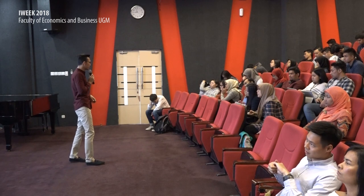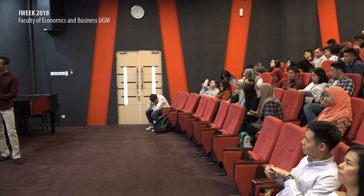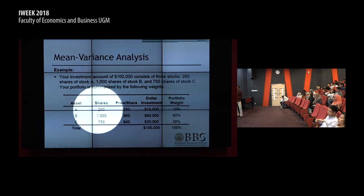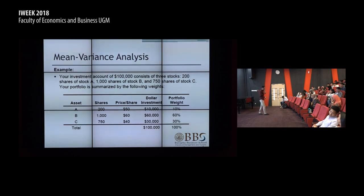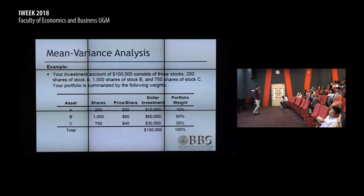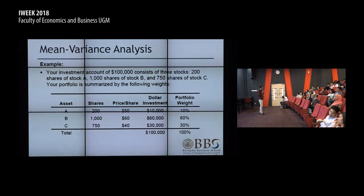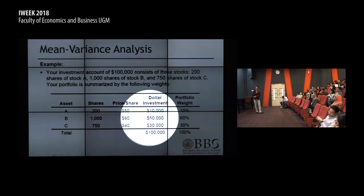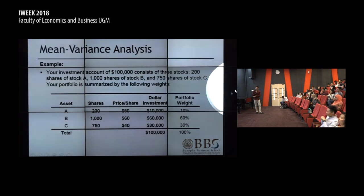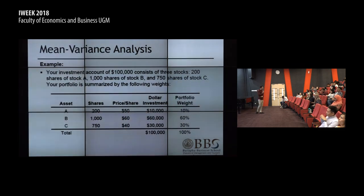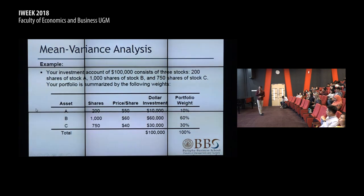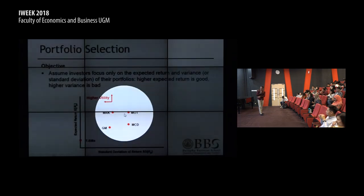Here is a simple calculation about weight. For example, you have 100,000 and you put 200 shares of stock A at 50 each — so you invest 10,000 in stock A. You invest 60,000 in stock B and 30,000 in stock C. So the weights will be 10%, 60%, and 30% respectively. This is a simple calculation: you invest 10,000 from the total 100,000, meaning 10% for stock A; 60,000 from 100,000 is 60% for stock B; and 30,000 from 100,000 is equivalent to 30% on stock C. This is the weight.